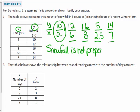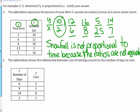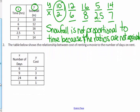Snowfall is not proportional. I'm answering in a full sentence, which means yes, you do have to start with a capital letter. And a lot of you are not showing periods at the end of your sentences. Snowfall is not proportional to time because the ratios are not all the same, or they are not equivalent. The ratios are not equivalent or not equal or not the same. So number one, the answer was no. Snowfall is not proportional.